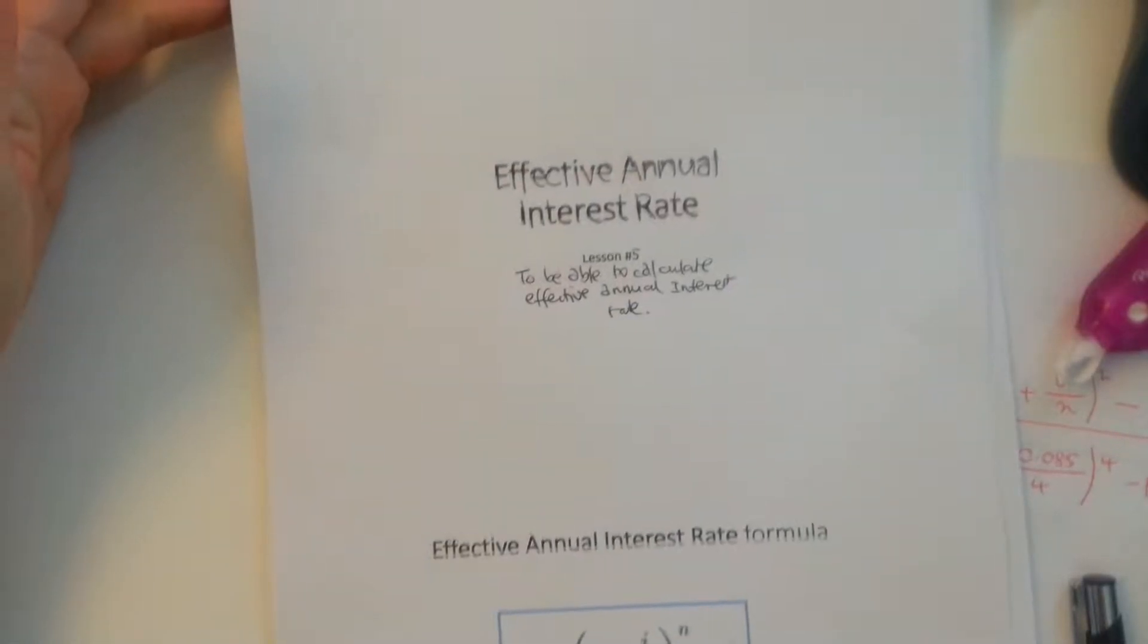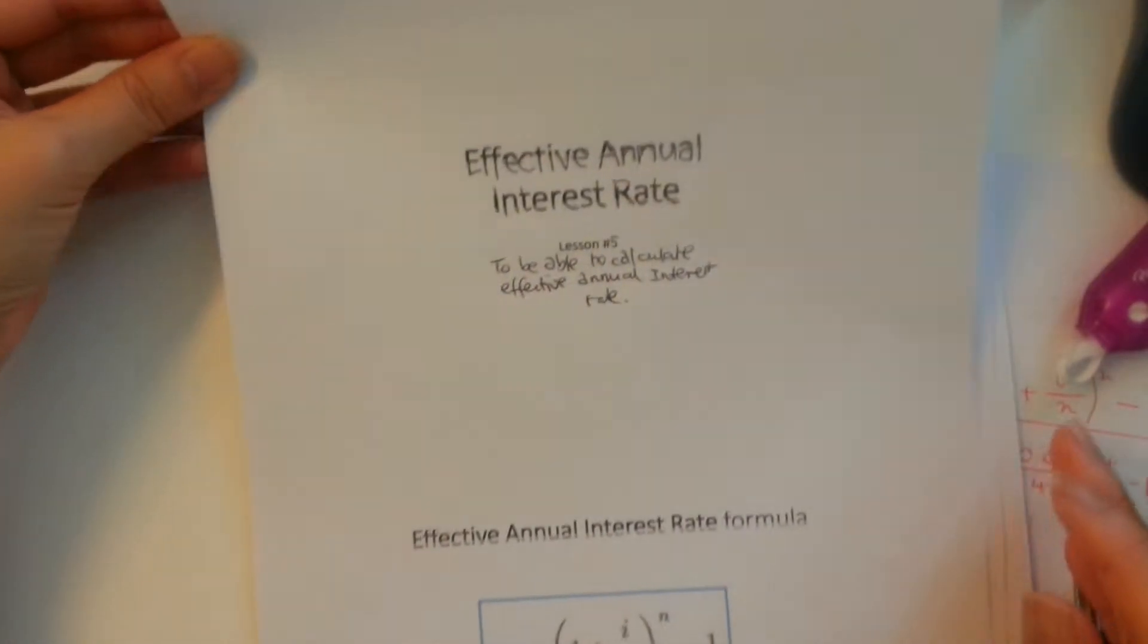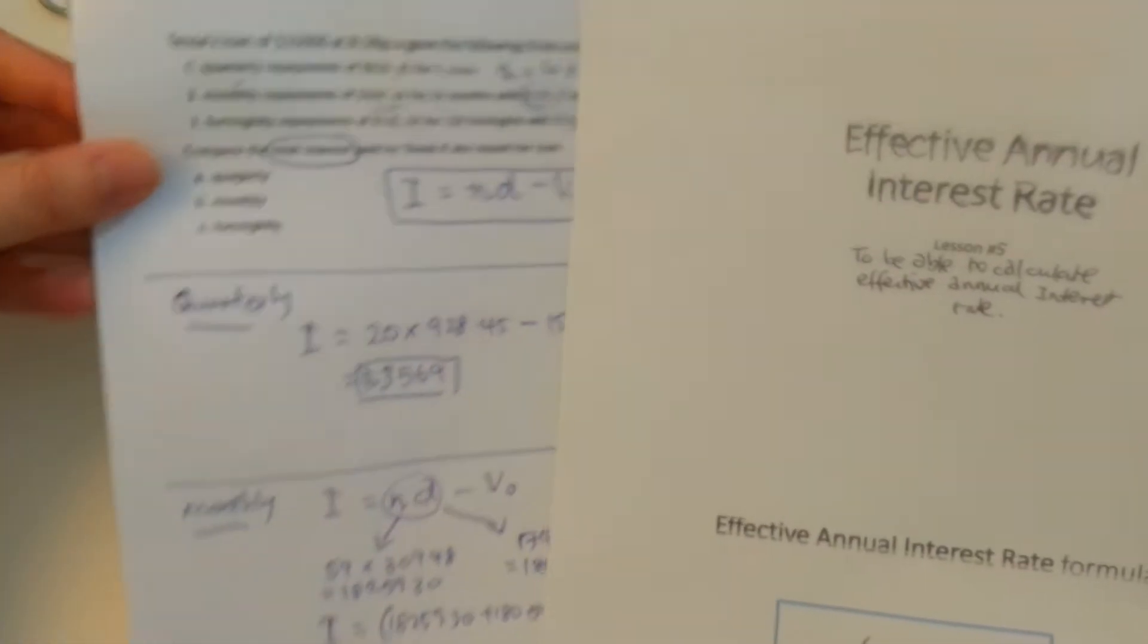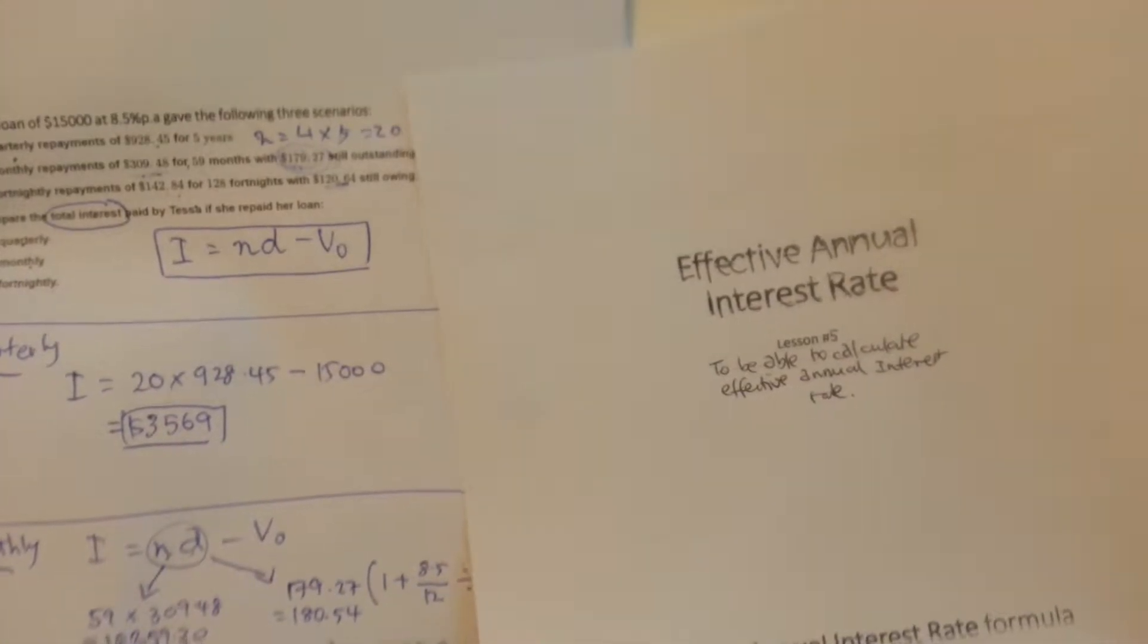Hi everyone, last lesson for your weekend, lesson number five on effective annual interest rates. I'm just going to go back two lessons on reducing balance loans part three, just to explain to you what we mean by effective annual interest.